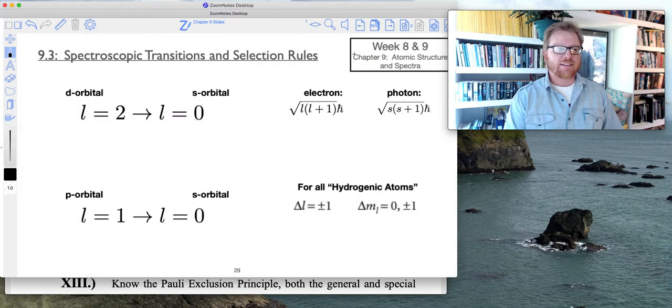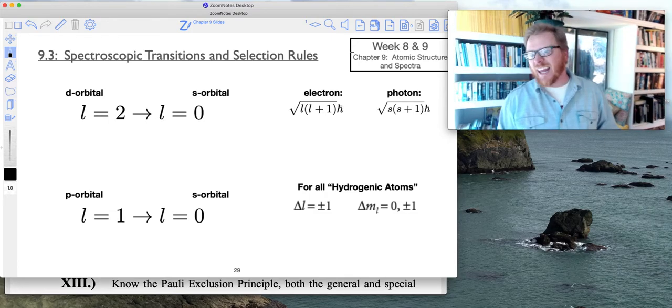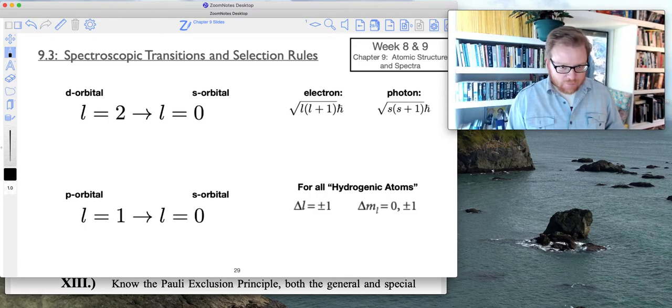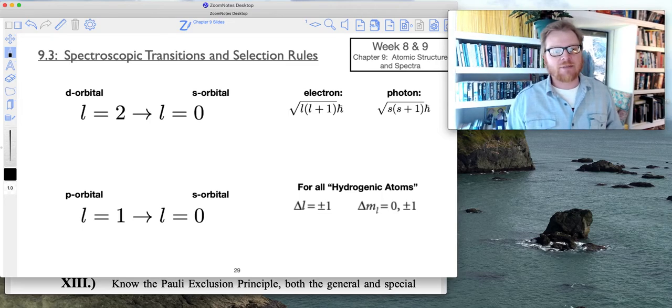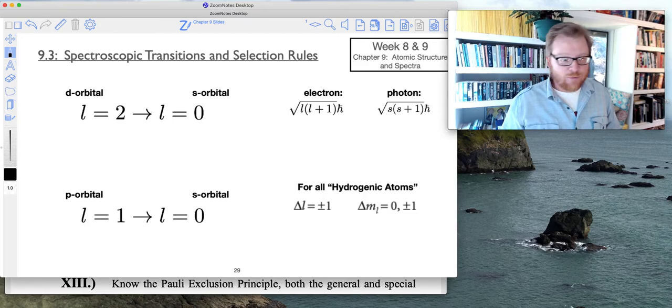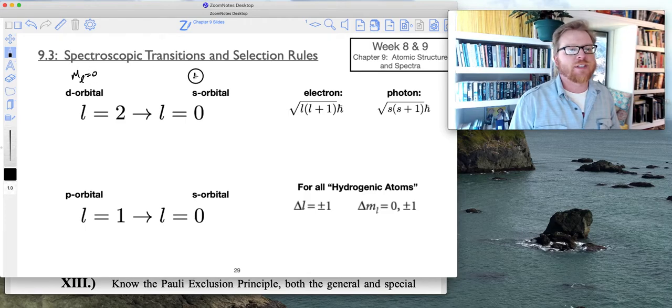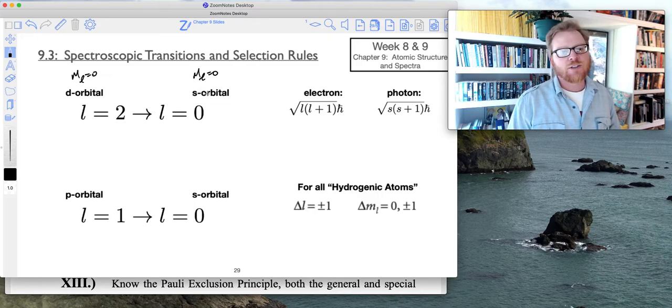For example, suppose we make a transition from a d orbital down to an s orbital, and we won't worry about what n level we're at. Because as it turns out, n doesn't give us angular momentum, it's l that's important. Specifically, we're just going to do this for m_l equals zero for both states to make this an easier discussion. We're talking about a d_z² orbital down to an s orbital.